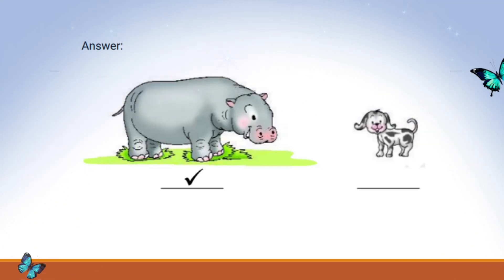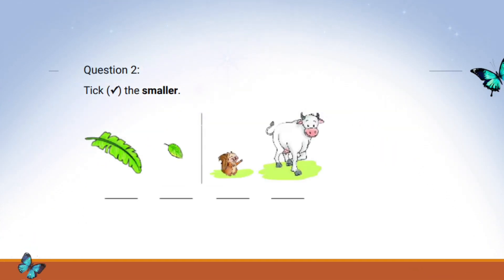Great job, everyone! In front of us, we have two different leaves, a banana leaf and an apple leaf. But, which one is smaller? Let's investigate.